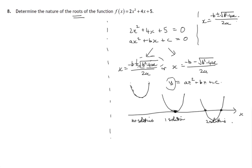It all depends on the square root of b squared minus 4ac. If you're taking the square root of a positive number you will definitely get an answer. For instance, the square root of 2 gives you plus the square root of 2 and minus the square root of 2 — two different answers. So if b squared minus 4ac is greater than zero, you'll produce two solutions. However, if b squared minus 4ac is zero, you get plus and minus the square root of zero. Since adding or subtracting zero has no effect, you get one answer.